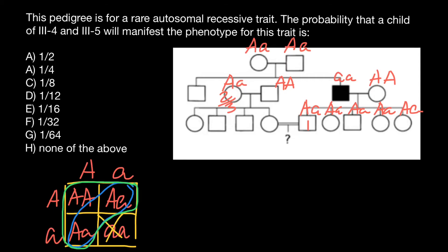So the probability for III-5's mother to be heterozygous is 2/3. Now let's find the probability that her daughter, III-5, is going to be heterozygous. The probability that she gets the dominant allele from her father's side is 100%. What is the probability she gets the recessive allele from her mother's side? There's a 50% chance of the dominant allele and a 50% chance of the recessive allele — so the probability is 1/2.